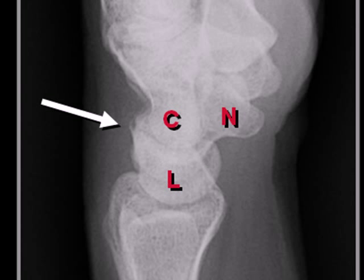On the lateral view, we see the lunate and the capitate line up with each other, as well as the distal radius. We can see the navicular, or scaphoid, anteriorly and on the dorsum of the wrist. The white arrow is pointing to the location where the triquetrum is.